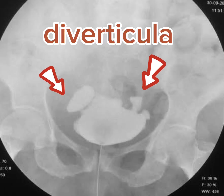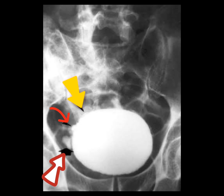This is an example of IVU examination where we can see the urinary bladder filled with contrast and there are multiple diverticula along the roof of the urinary bladder. Another example shows a cystogram where contrast fills the urinary bladder, showing multiple small diverticula along its roof and right wall.